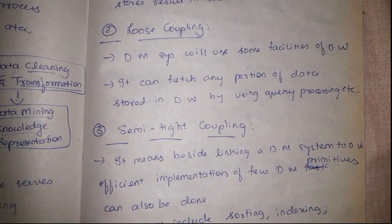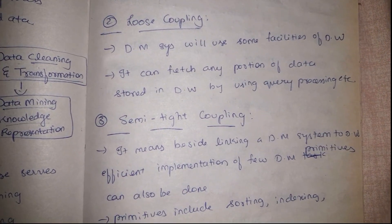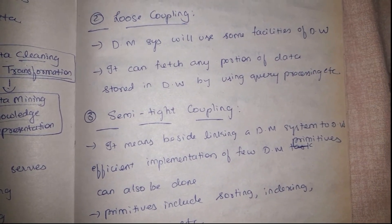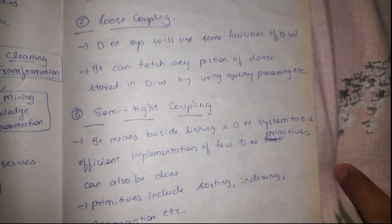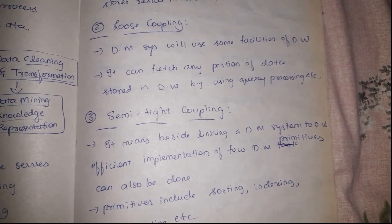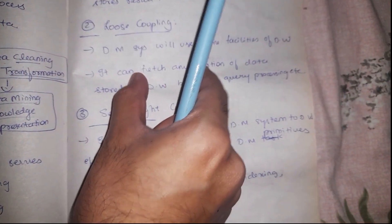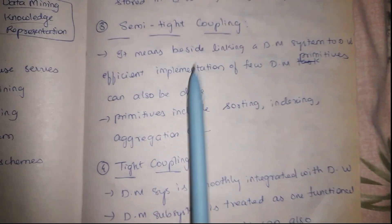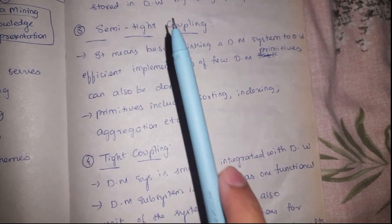The second mechanism is loose coupling. In loose coupling, the data mining system makes use of some facilities of the data warehouse — for example, it can fetch a portion of data from the data warehouse and apply some query processing tools on that particular portion of data. So it uses only some part of the data warehouse.